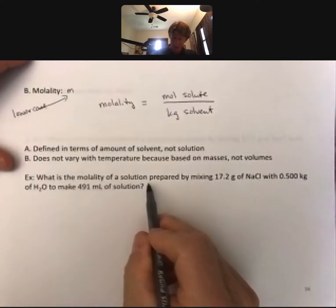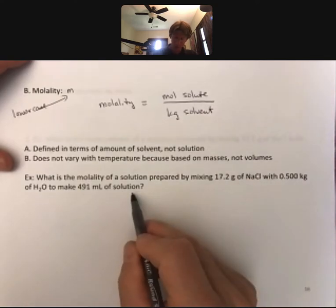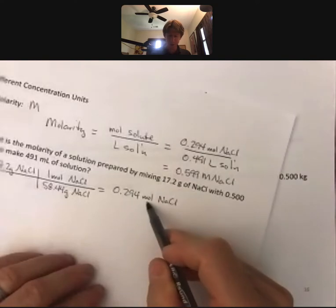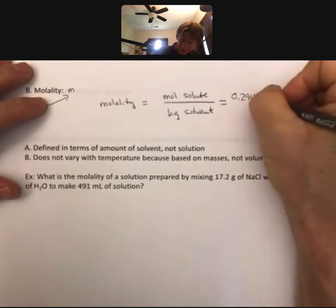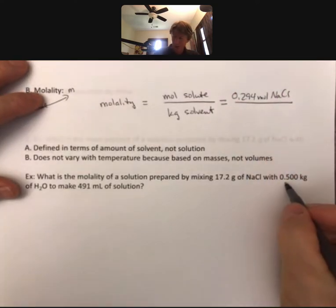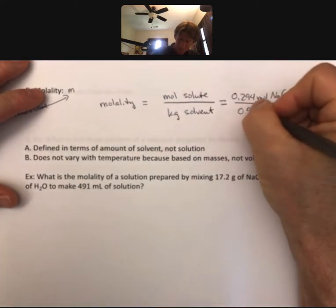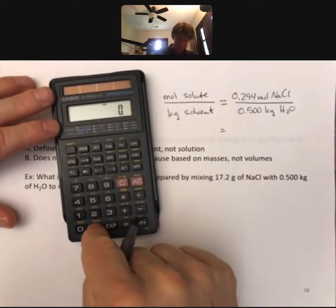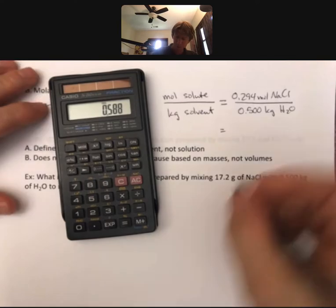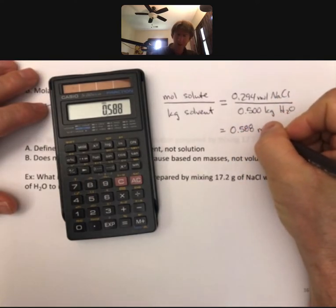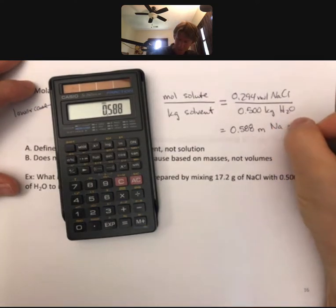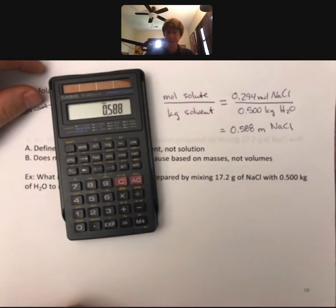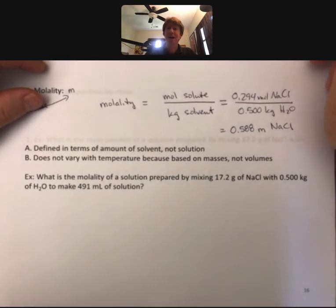Now let's do molality of the same solution. We had this question before and we did molarity; now it's molality. Looking at our previous page, we've got 0.294 moles of sodium chloride, and we have 0.500 kilograms of H₂O. When we calculate that out, I get 0.588 lowercase m — molality of NaCl. You will see molality in future chemistry classes, probably in biology classes as well, though it is used less often than molarity.